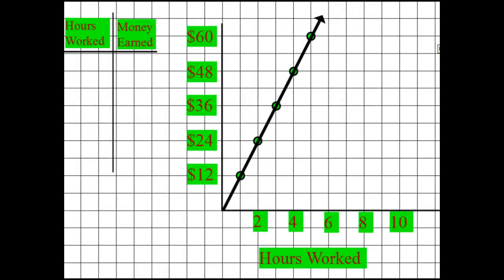Let's take a look at another graph. I want to know the rate of change — how does this thing move along? What is the proportion and what is the unit rate? Along the side here is money earned, and on the bottom we have hours worked. Let's populate this table. I know this point is two hours and twenty-four dollars, so let's put that in: two hours is twenty-four dollars. And I have another one at four and forty-eight.